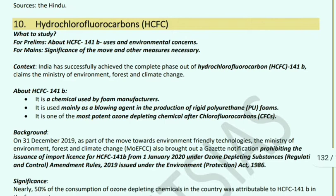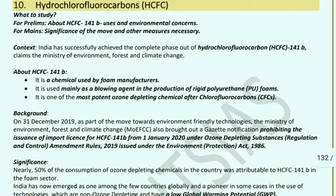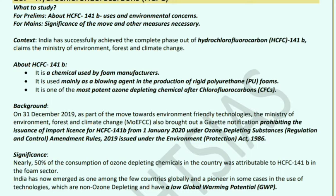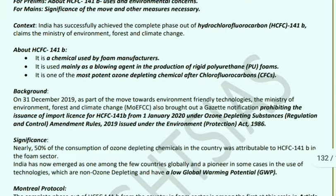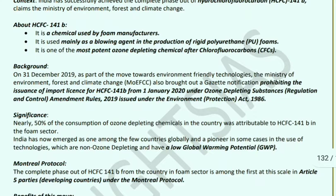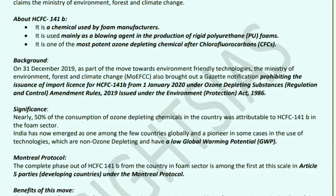HFCs Phase-out: India has successfully completed the phase-out of HCFC-141B, as claimed by the Ministry of Environment, Forest and Climate Change. HCFC-141B is a chemical used by foam manufacturers as a blowing agent in rigid polyurethane — and is the most potent ozone-depleting chemical after chlorofluorocarbons (CFCs). The phase-out was completed by December 31, 2019. The Ministry of Environment issued a gazette notification that no import license would be issued for HCFC-141B, which has no ozone-depleting properties and low global warming potential.